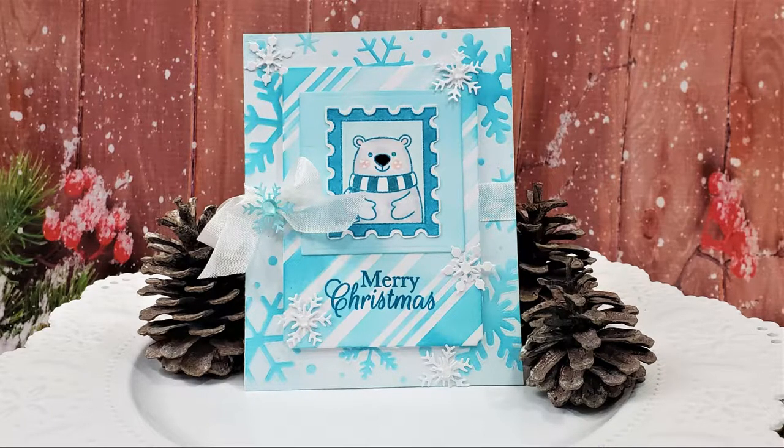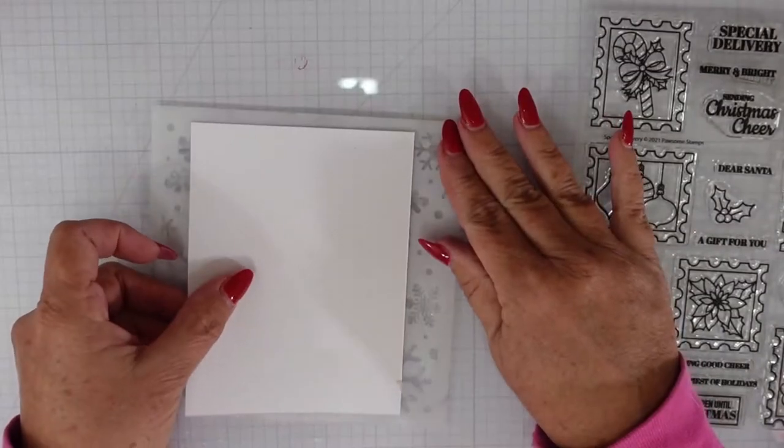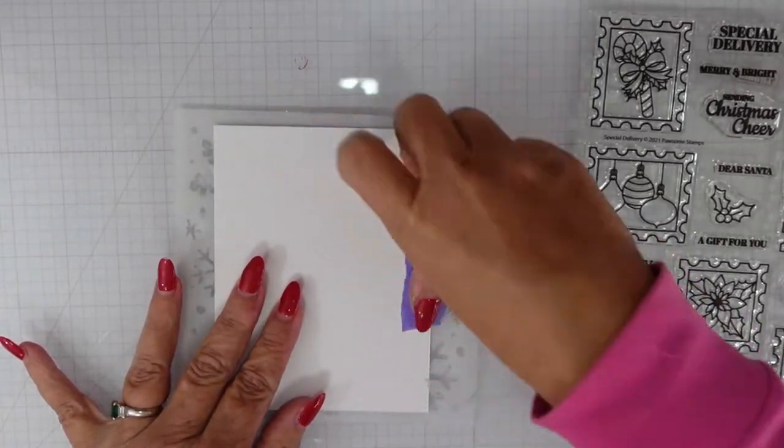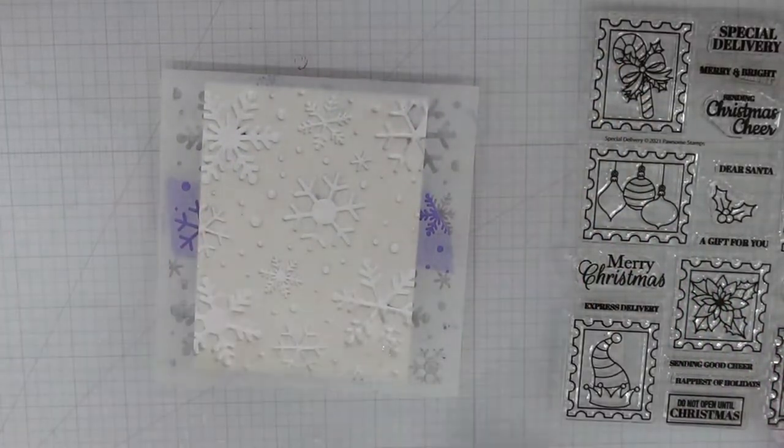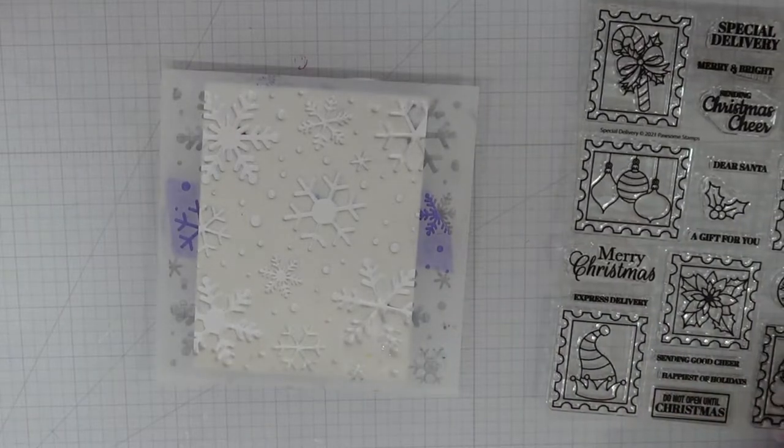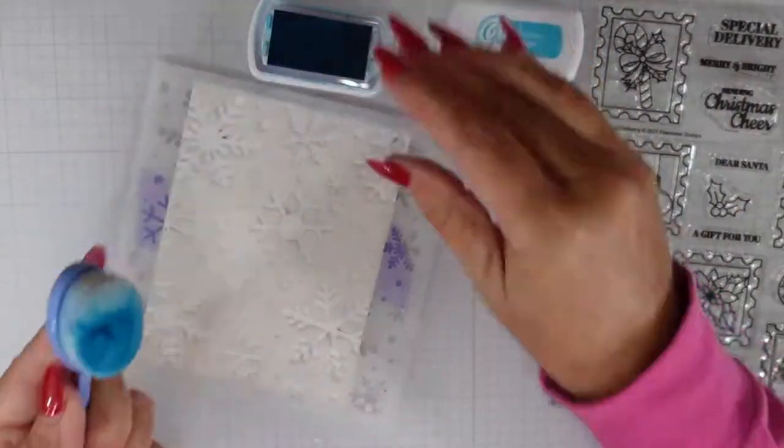Let's jump right into our project. I am starting with a four and a quarter by five and a half inch white piece of cardstock. I'm going to tape this to the back of the stencil. Once I flip it over, it's going to help keep that in place so that I can do a little bit of ink blending.